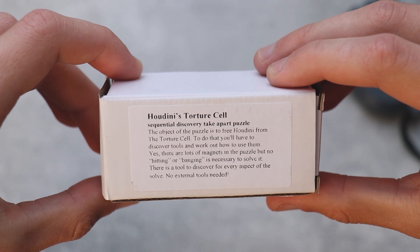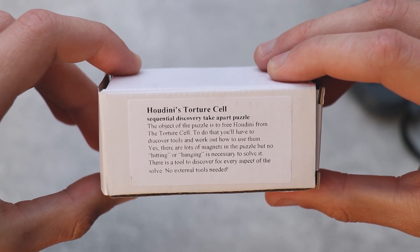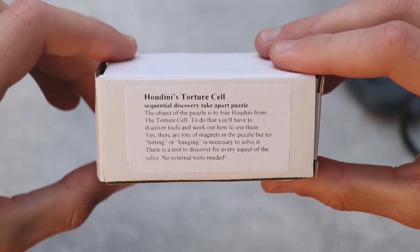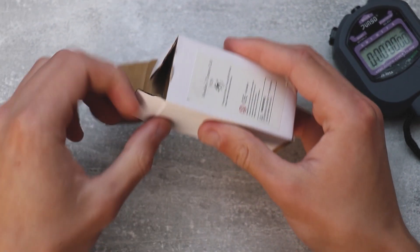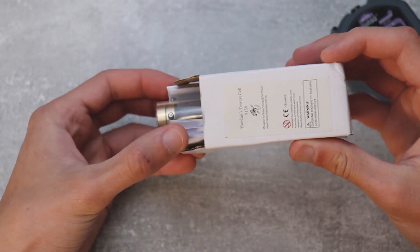The object of the puzzle is to free Houdini from the torture cell. To do that you'll have to discover tools and work out how to use them. There are a lot of magnets in the puzzle but no hitting or banging is necessary to solve it. There's a tool to discover for every aspect of the solve. No external tools needed. Let's open this up. I never thought I will be able to solve this puzzle and being able to do it on a challenge, even better.